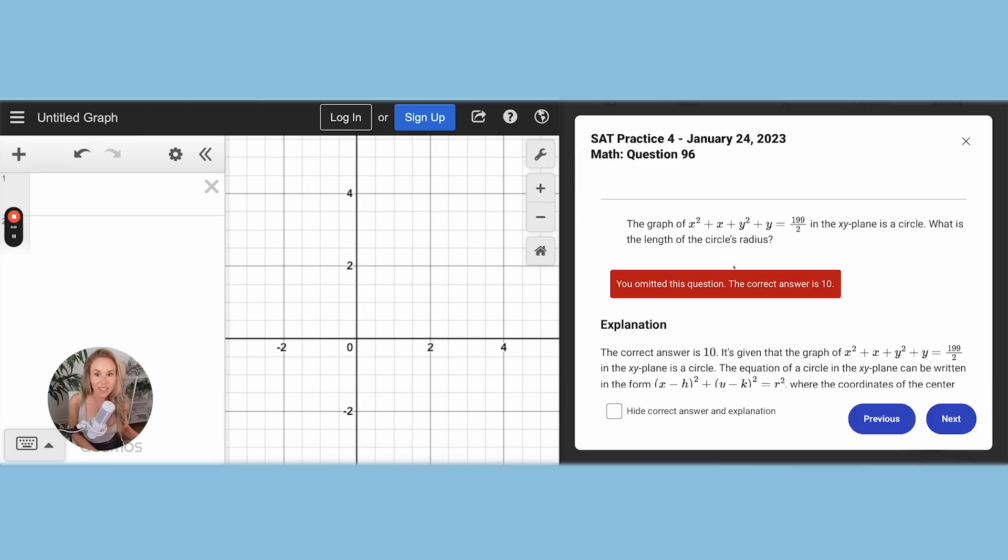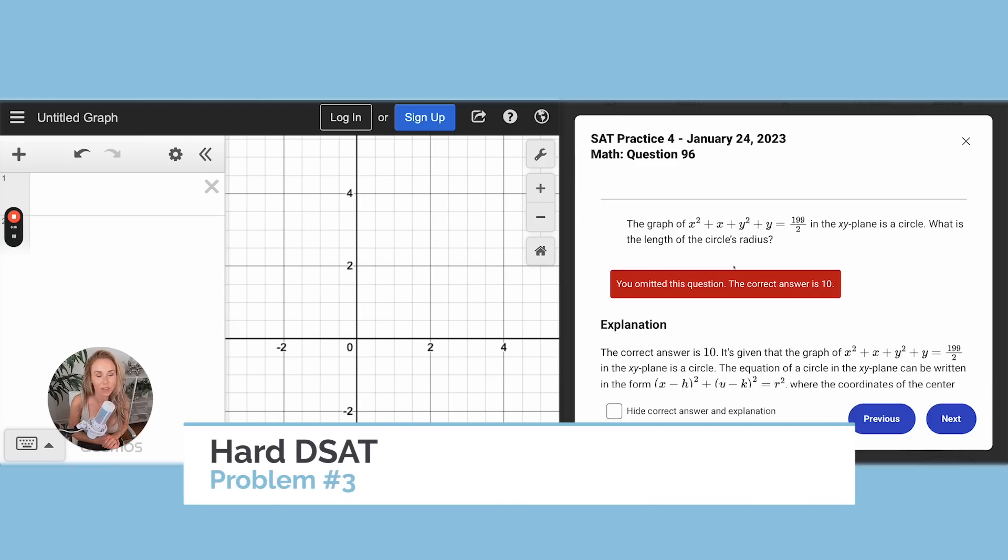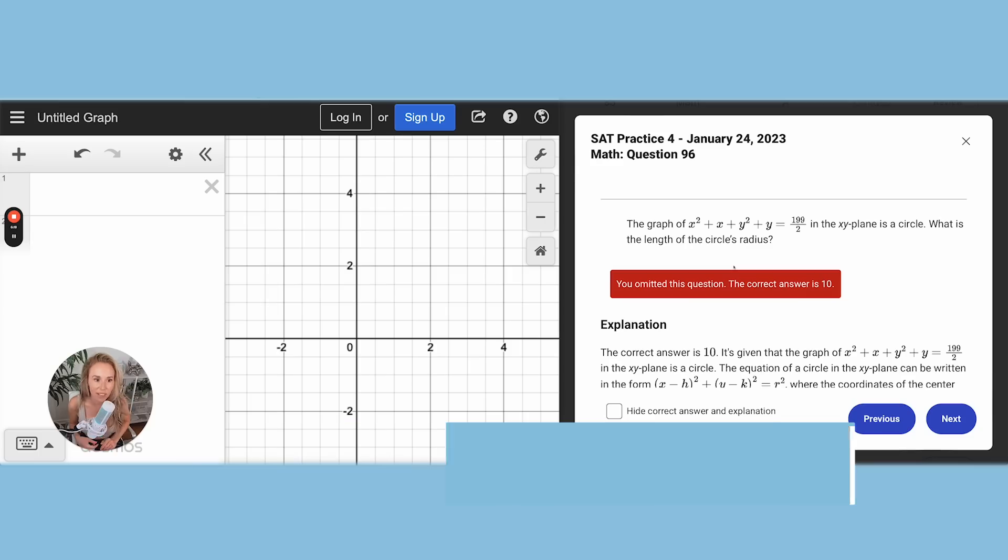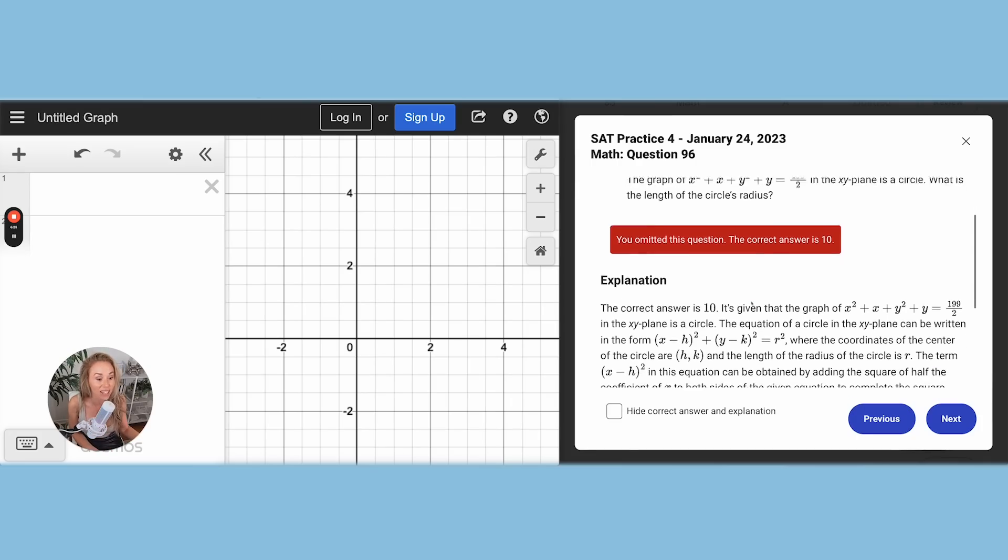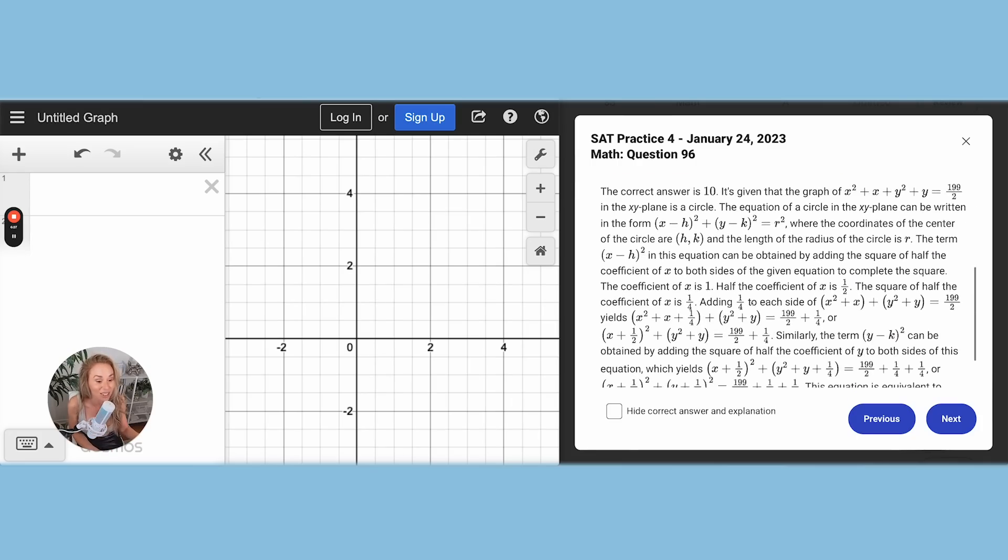All right, so this next one is a circle equation and they want the circle's radius. Yes, you can complete the square and do a whole bunch of stuff. It is equal to a nasty fraction. So that's going to be annoying.